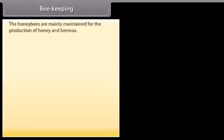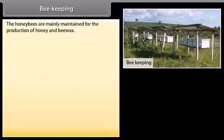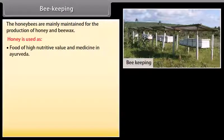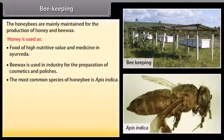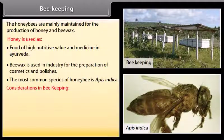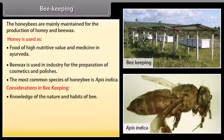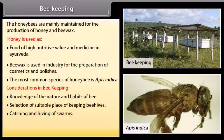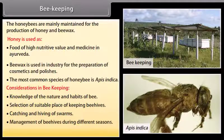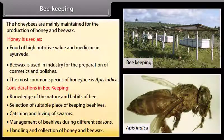Beekeeping. Honey bees are maintained for the production of honey and beeswax. Honey is used as food of high nutritive value and in Ayurvedic medicine. Beeswax is used in industry for cosmetics and polishes. The most common species of honey bee is Apis indica. Key considerations in beekeeping include: knowledge of bee nature and habits, selection of suitable location for beehives, management of beehives during different seasons, and handling and collection of honey and beeswax.